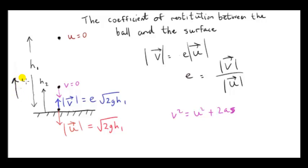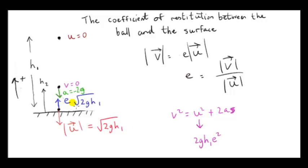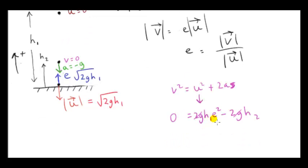The initial speed u is upwards, so it's positive. If we square that, we get e² times 2gh1, or 2gh1·e². The acceleration is downwards, so it's minus g, giving minus 2g. The height is h2. So here the initial speed squared is 2gh1·e² and the final speed is 0, so this equals 0 squared. We can solve this equation to find what e is.